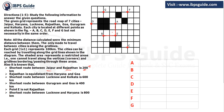So Rajasthan can be point A (with E as Jaipur), Rajasthan can be point E (with A as Jaipur), or B can be Rajasthan with E as Jaipur. However, we then note that point E is not Rajasthan based on additional constraints, so Rajasthan can only be A or B. That gives us two cases: Rajasthan at point A, or Rajasthan at point B.